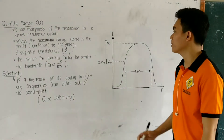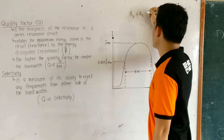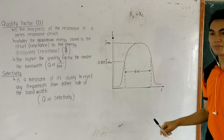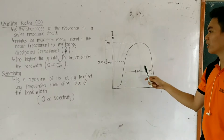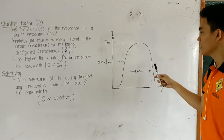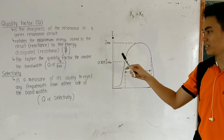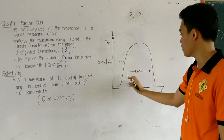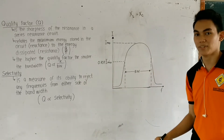Based on our last discussion, we know that resonance happens when both the reactances XL and XC are equal. Seeing from this graph, we know that if both the reactances are equal, the current is at maximum. We can see the sharpness of the current in its graph. The sharpness of this graph is called the quality factor, while the measure of its ability to reject any frequencies from the lower bandwidth to the higher bandwidth is called selectivity.